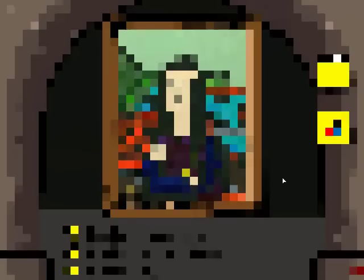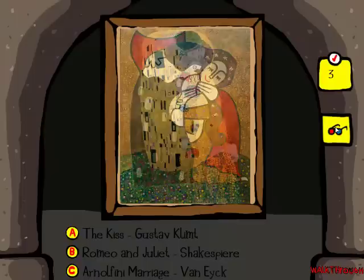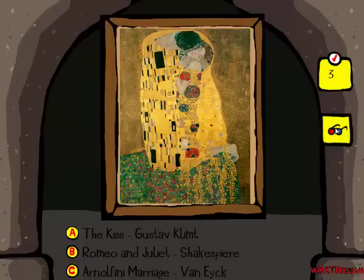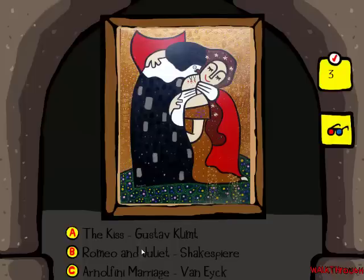The Bad Sign. This is The Kiss by Gustav Klimt. It doesn't look like a Van Eyck to me. I mean, it could be The Marriage — Arnolfini Marriage. But I'm pretty sure it's not. It's certainly not Romeo and Juliet by Shakespeare. So I'm going to say The Kiss by Gustav Klimt. And I'm right. We got a Hickey.